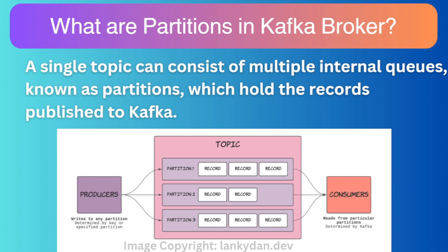Each partition within a topic maintains its own order of messages. Producers push records to any partition within a topic. When submitting a record, a partition is chosen either by its key or by explicitly specifying to which partition the producer wants to push the message. When consumers subscribe to a topic, they are assigned specific partitions from which they receive records.